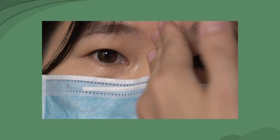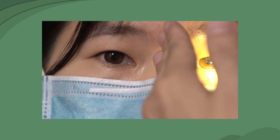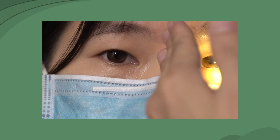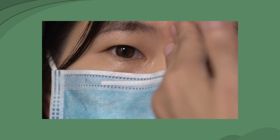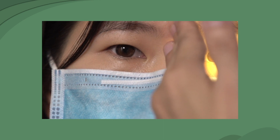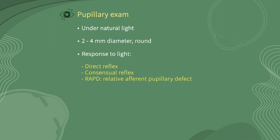Indirect reflex: again ask the patient to look straightforward. The examiner places his or her hand on the patient's nasal bridge to block the light coming from one side and crossing to the other. Then shine a light to the patient's eye and check whether the contralateral pupil dilates.